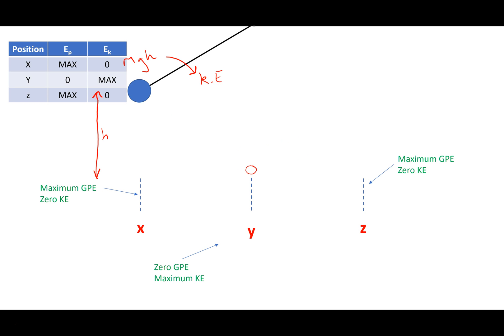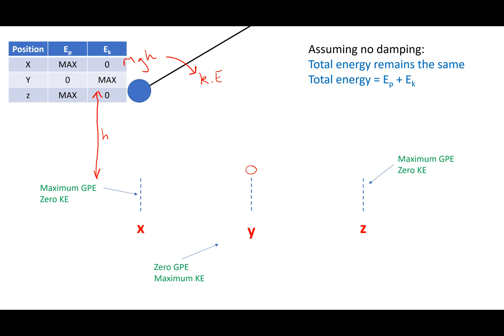If we were to put this in table form, we get this one here, and it's worth remembering that. If we assume there's no damping in the system at all, no dissipative forces slowing things down, the total energy in the system remains the same. That is, the total energy is always going to be the sum of the potential and the kinetic energies. So when its potential energy is maximum at the amplitude, that potential energy will equal the total energy of the system, since it will have zero kinetic energy at that point.